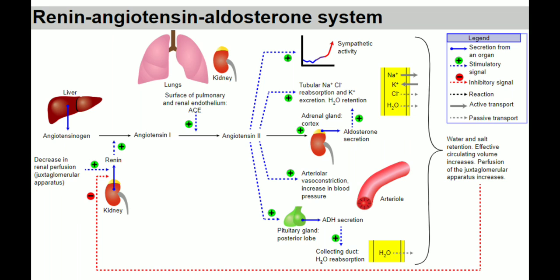As a result, blood volume and effective circulating blood volume increase, so blood pressure increases and renal perfusion increases. When renal perfusion increases, renin secretion decreases. This is the negative feedback loop — when blood pressure increases, renin production is inhibited.